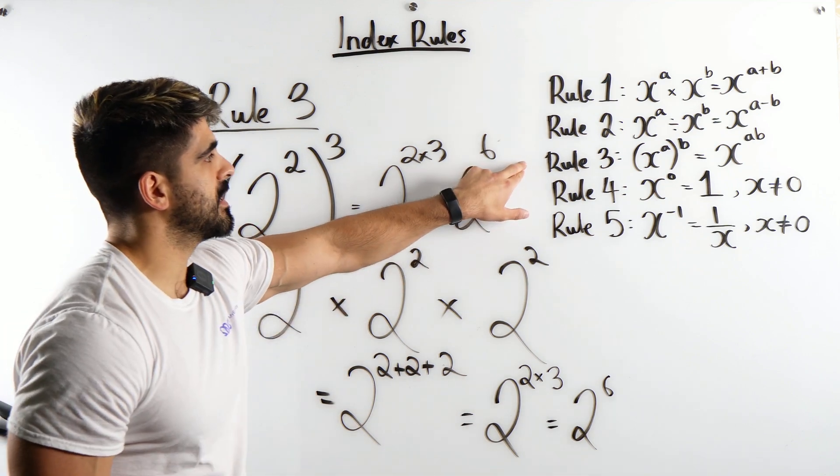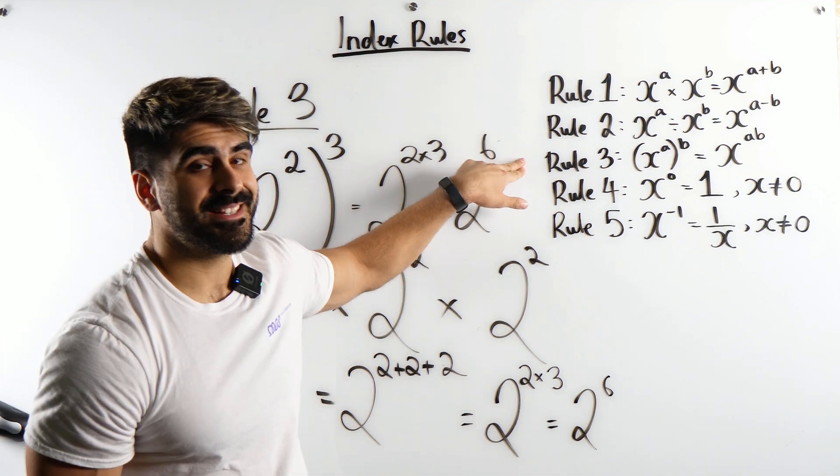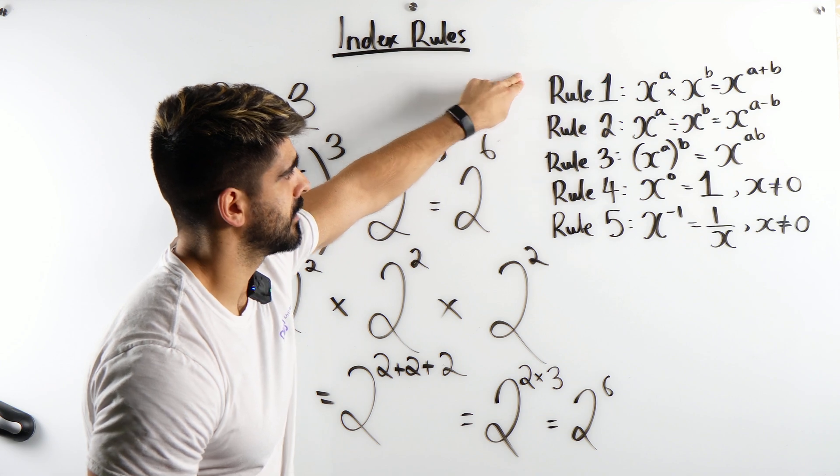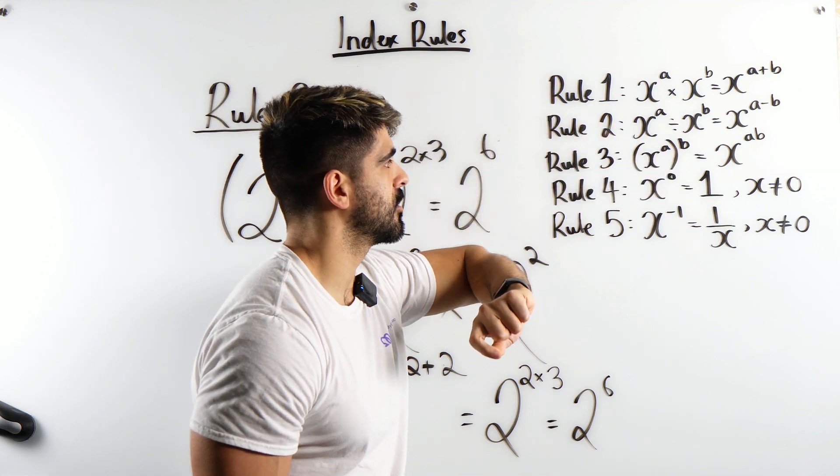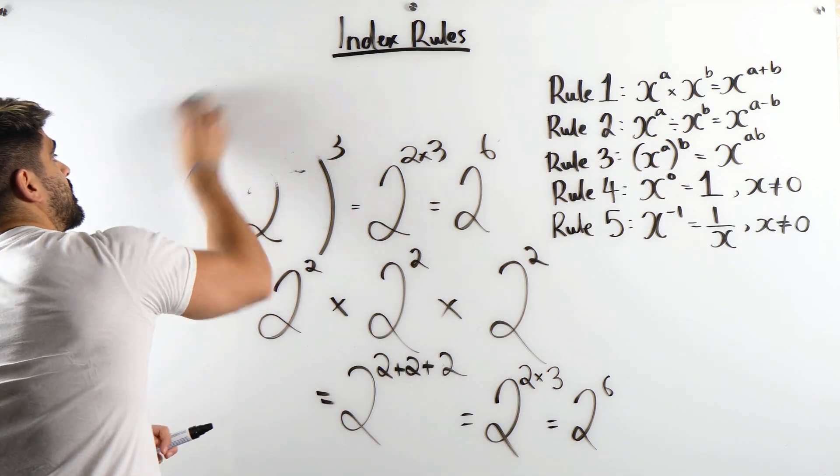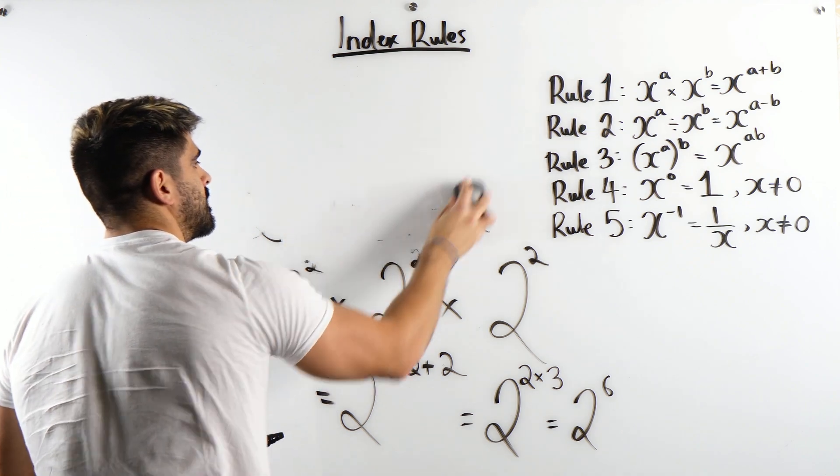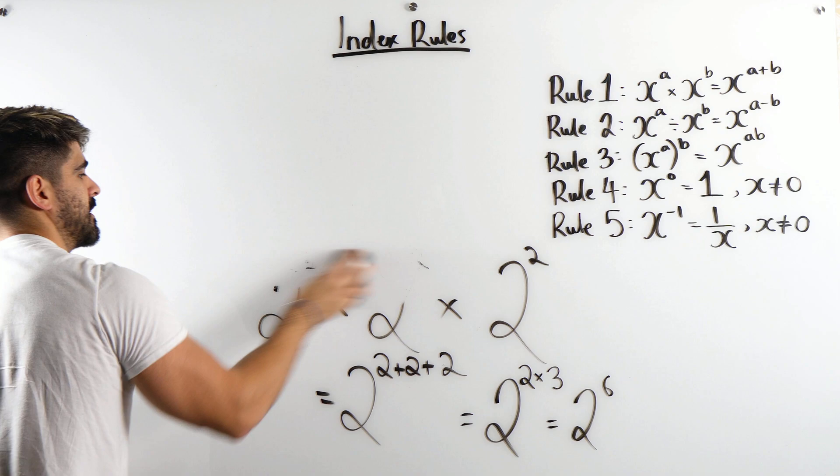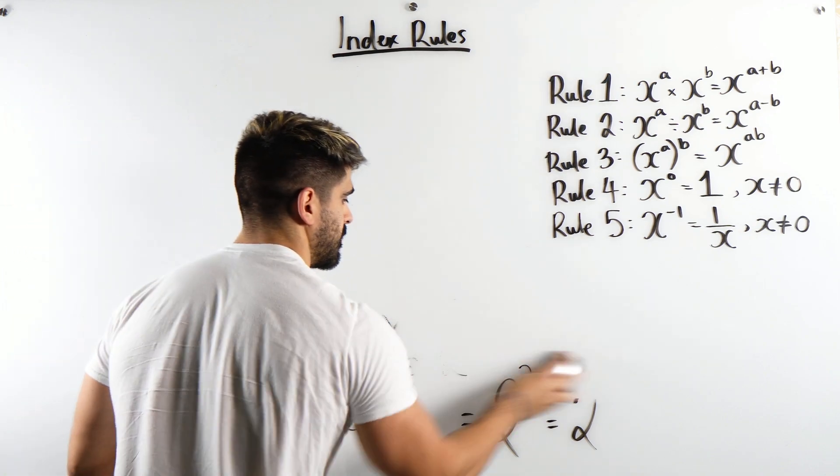So this rule 3 is just repeated rule 1. And this is why we multiply those numbers. Not to get confused though, I think this is really important, rule 3, if the bracket is not there, it does not apply anymore.